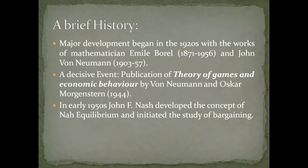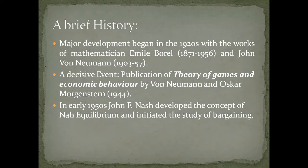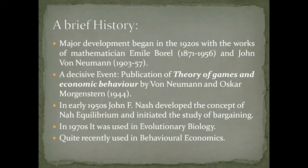Now comes the stalwart in the field — the most famous game theoretician many of us must have come across: John F. Nash. In 1950, he gave the concept of Nash equilibrium and initiated the study of bargaining, which we will be discussing in consecutive lectures. In the 1970s, game theory was used in evolutionary biology, and recently it has also been used in the field of behavioral economics as well.